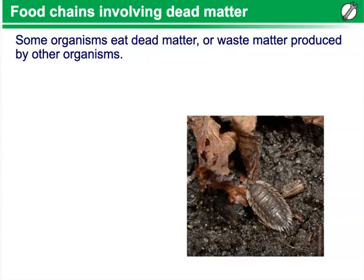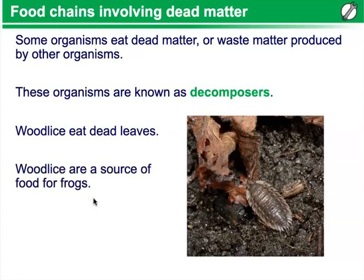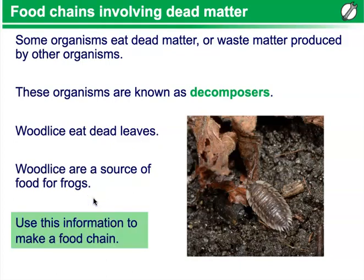Food chains involving dead matter. Some organisms eat dead matter or waste matter produced by other organisms — these organisms are known as decomposers. Wood lice, for example, eat dead leaves, and wood lice are then a source of food for frogs. Using this information, we could create a food chain showing dead leaves being eaten by wood lice, and then the wood lice being eaten by frogs.